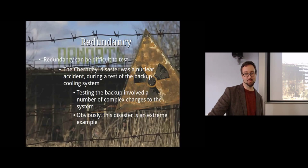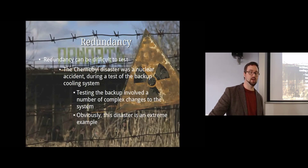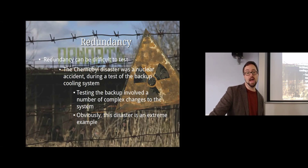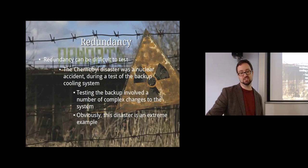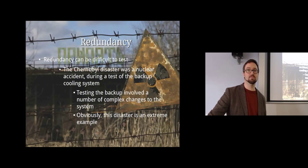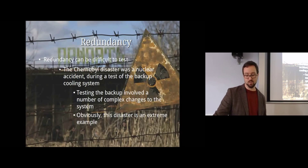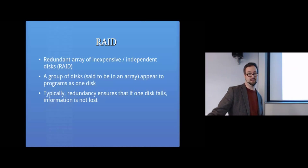The Chernobyl disaster is a relevant example - there was a nuclear incident during a test of the backup cooling system. Testing the backup involved a number of complicated changes, and while they were testing the system it created one of the largest disasters that's ever happened. It's an exaggerated example, but the point is that things can go wrong when testing backup systems.